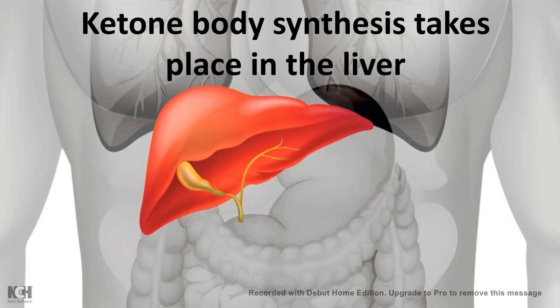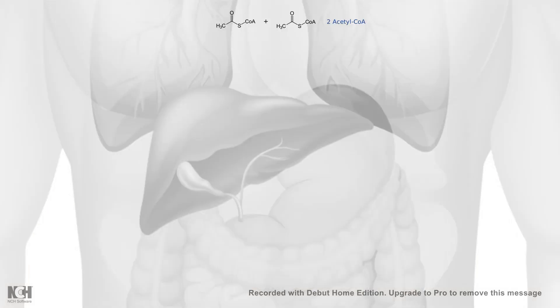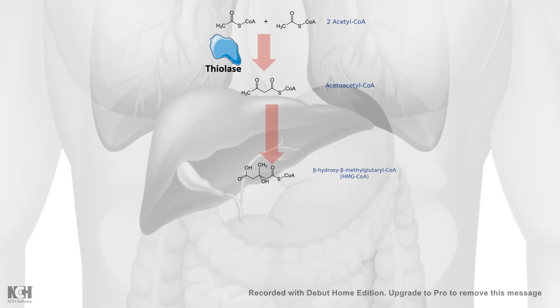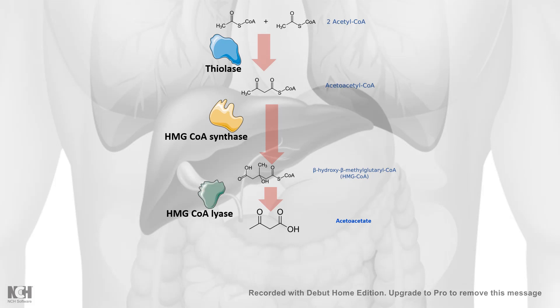The primary site for ketone body synthesis is the liver hepatocytes. Inside the liver hepatocytes, acetyl-CoA is converted to acetoacetyl-CoA. In the fasted situation, the liver gets acetyl-CoA from fatty acid oxidation. This first step of ketone body synthesis is carried out by the enzyme thiolase. Then acetoacetyl-CoA is converted to HMG-CoA by the enzyme HMG-CoA synthase.